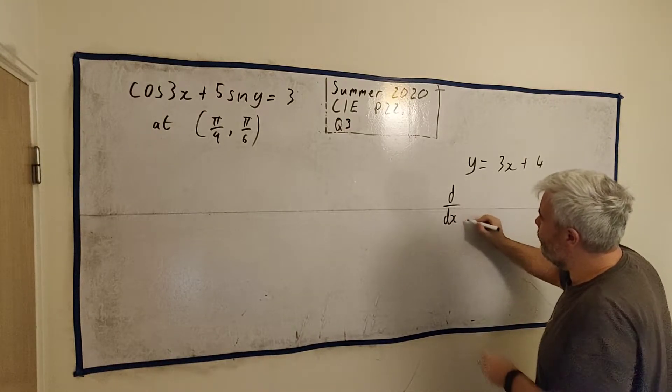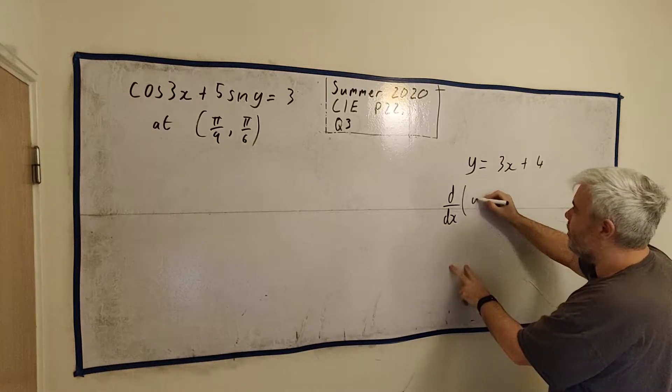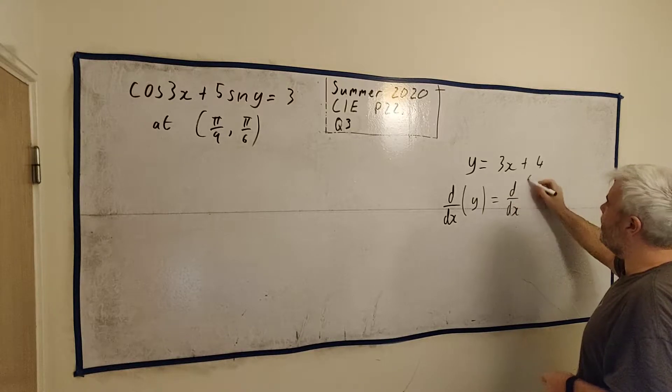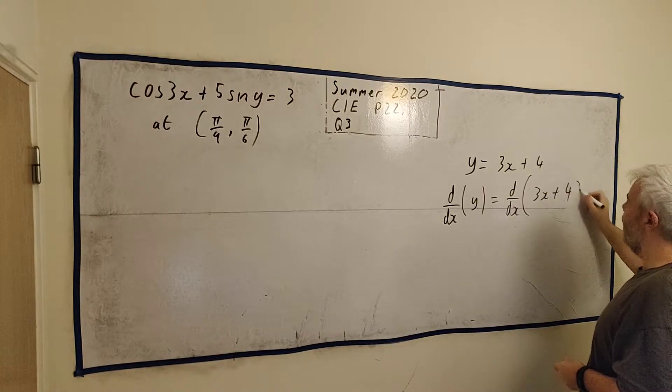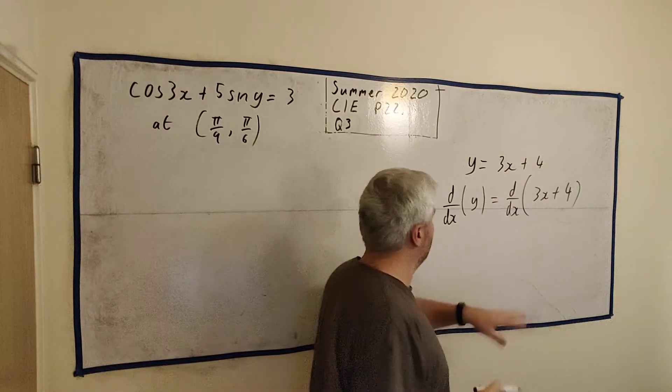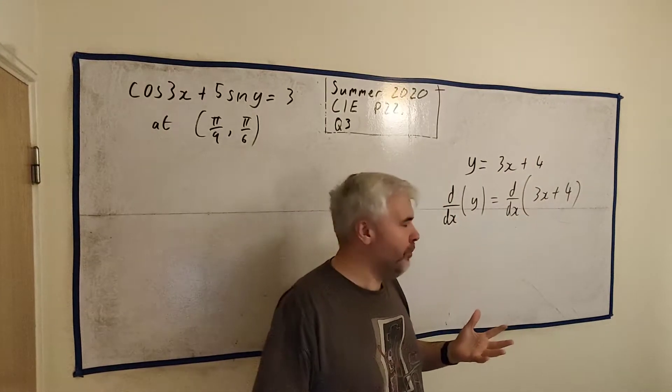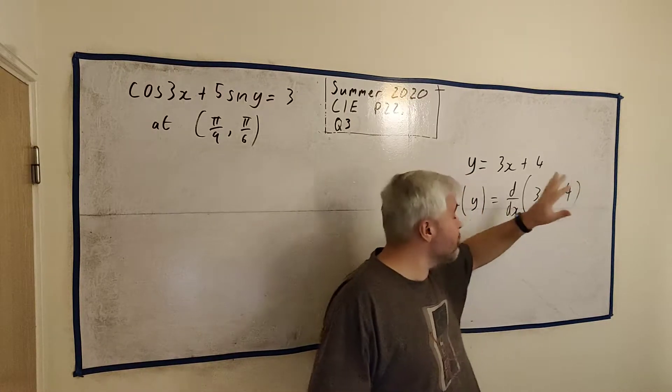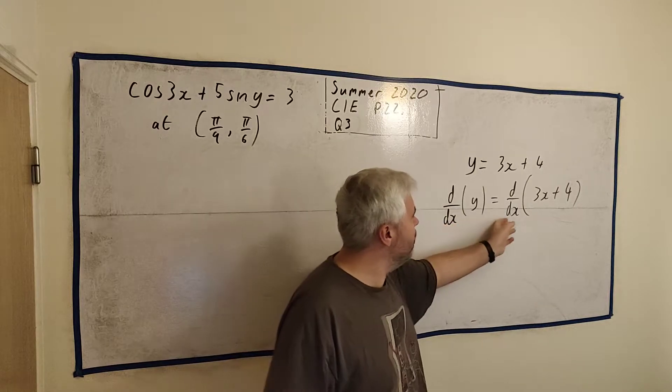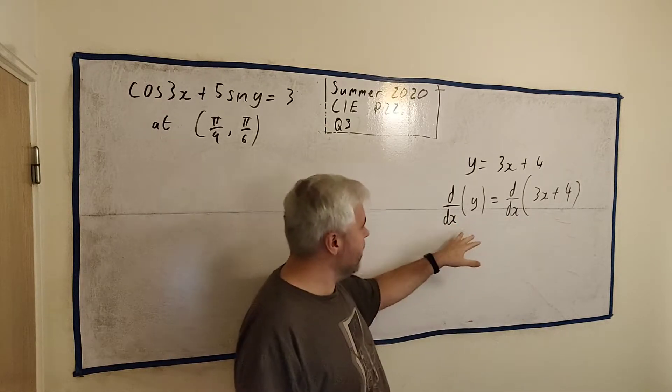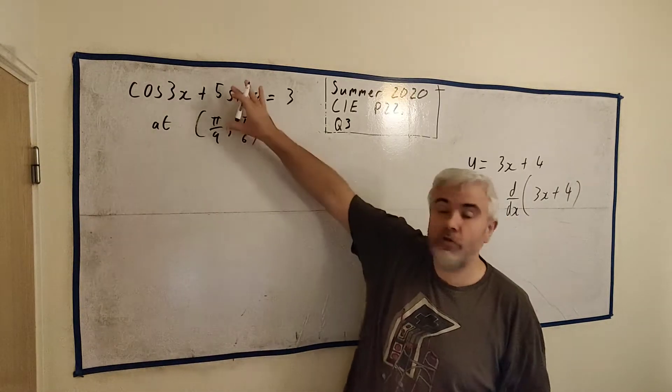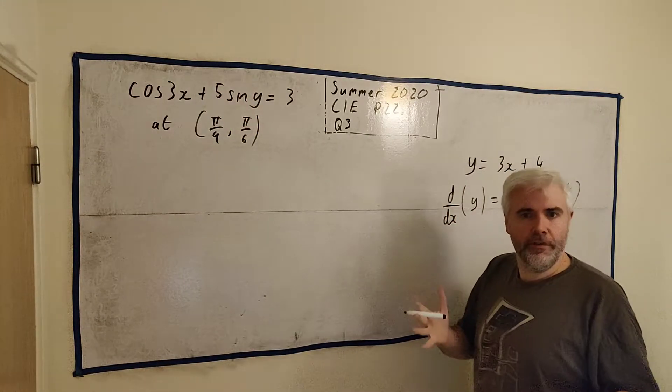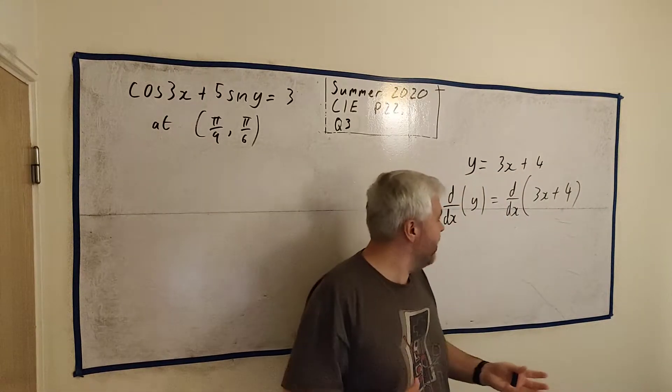y is equal to 3x plus 4. Students are happy to differentiate this, but let me show you what you're actually doing. You're differentiating the left, d/dx with respect to x, everything on the left. And then you're differentiating with respect to x, everything on the right. The reason I write it this way is because it's going to be useful for dealing with one like this.